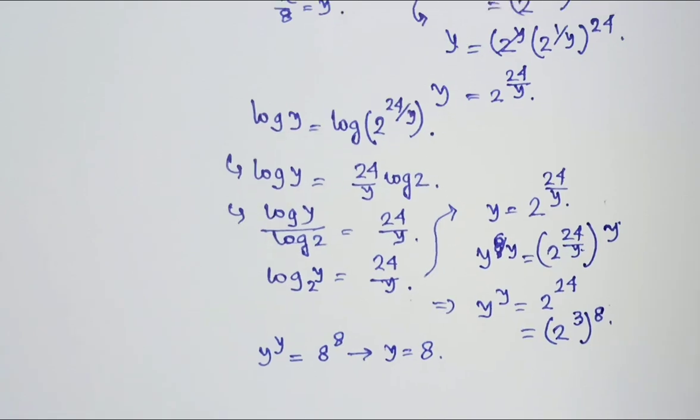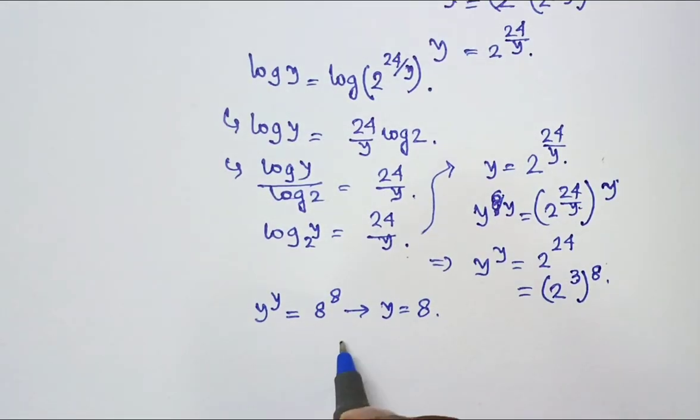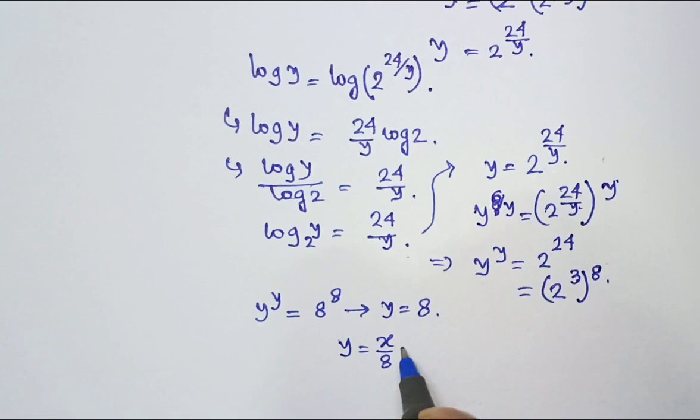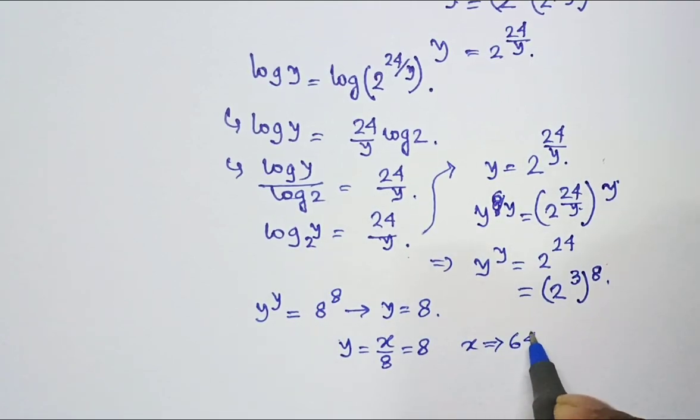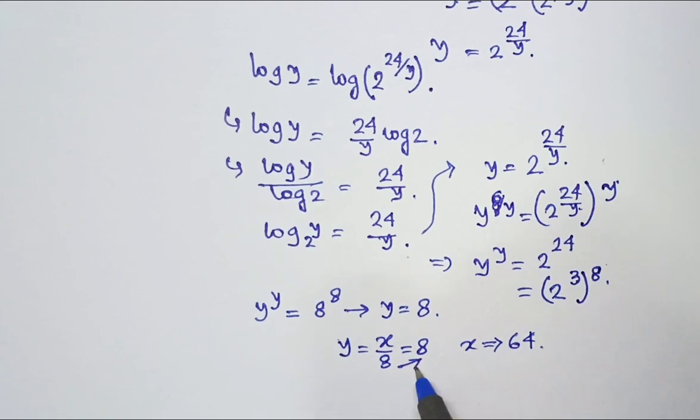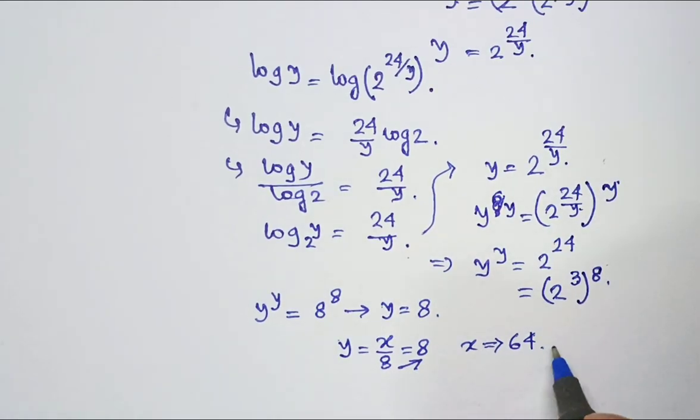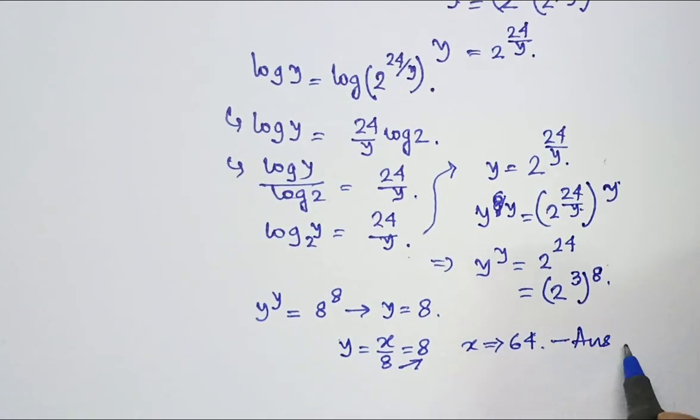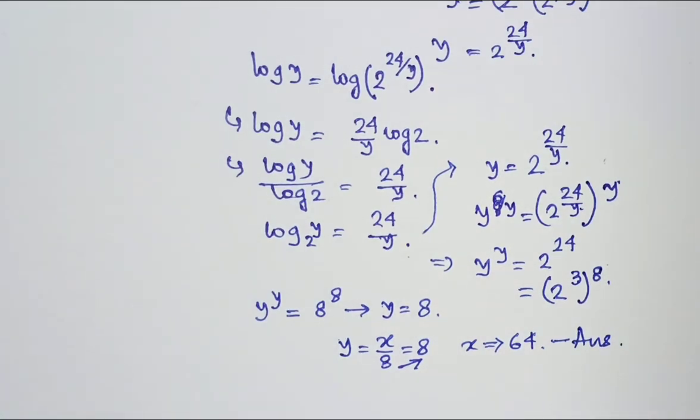Now what is my assumption for the variable y? y equal to x by 8 that is 8. So x becomes 64. We get it through cross multiplication. That is the answer of this complex equation which comprises of logarithm and exponents as well.